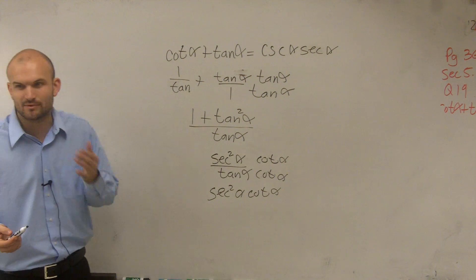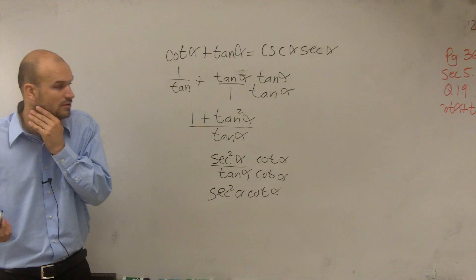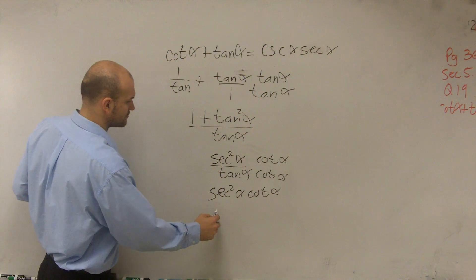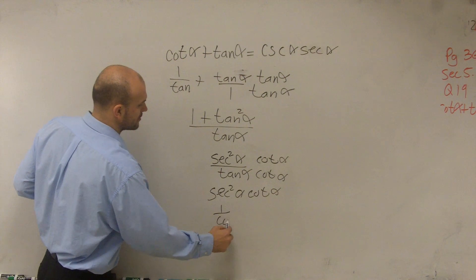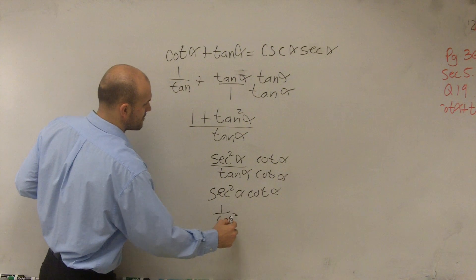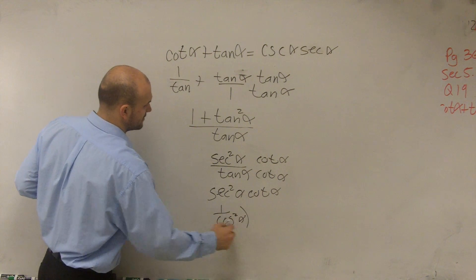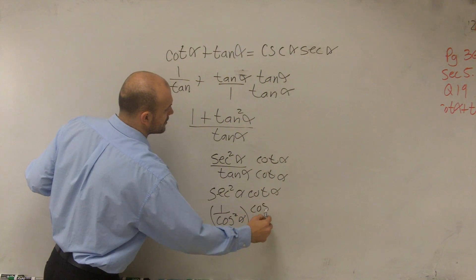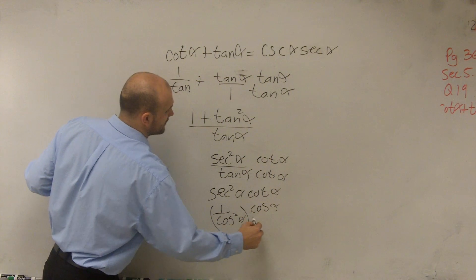Now, this might make a little sense, you might say, well, what exactly do I have here? Well, remember, secant is going to be 1 over cosine squared of alpha times cotangent is going to be cosine of alpha over sine of alpha.